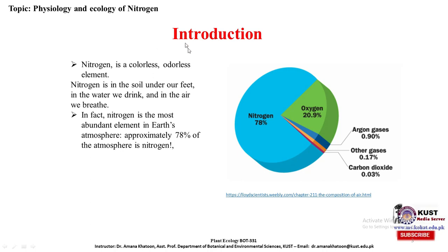First, a brief introduction about nitrogen. Nitrogen is a colorless, odorless element. It is present in the soil, in the water we drink, and in the air we breathe. In fact, nitrogen is the most abundant element in Earth's atmosphere — approximately 78% of the atmosphere is nitrogen.